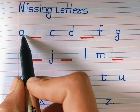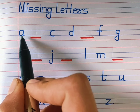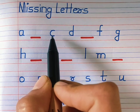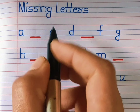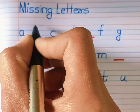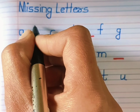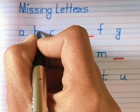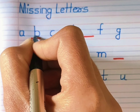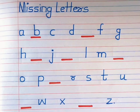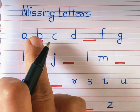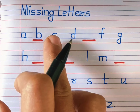Which alphabet is this? Yes, A. What comes after A and before C? Yes, small B. A, B, C.